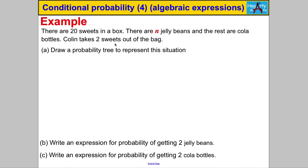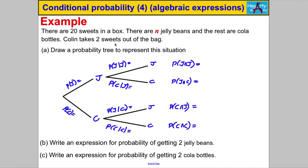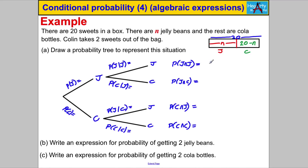Let's get straight on and try a question. Let's draw ourselves a tree diagram to start with. Before we launch into filling in the probabilities, let's just have a quick think. It says there are 20 sweets in the box, so there are n jelly beans out of those 20. The rest are cola bottles, so the expression for cola bottles is 20 subtract n.